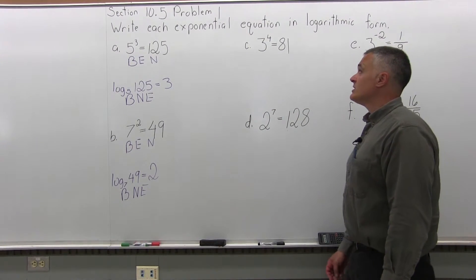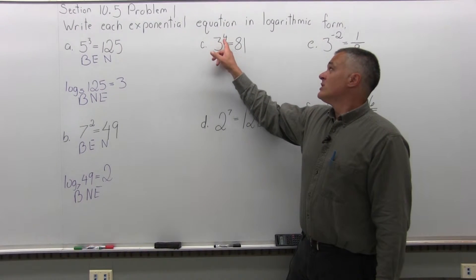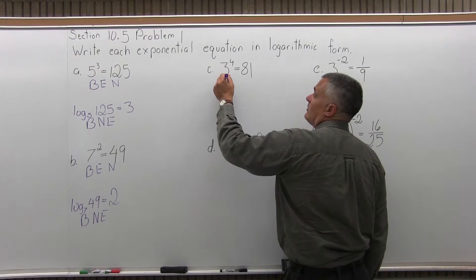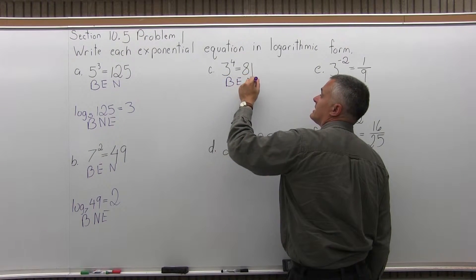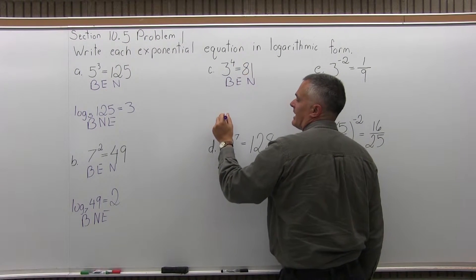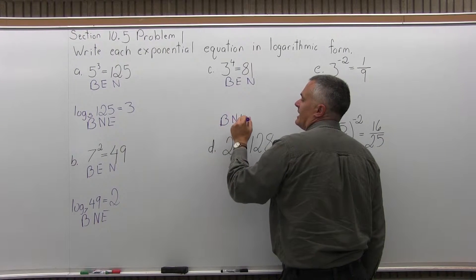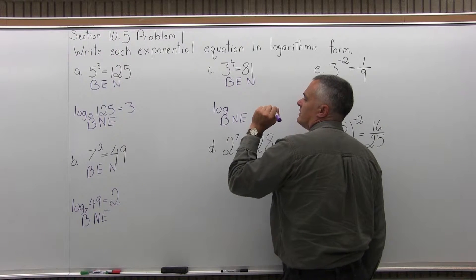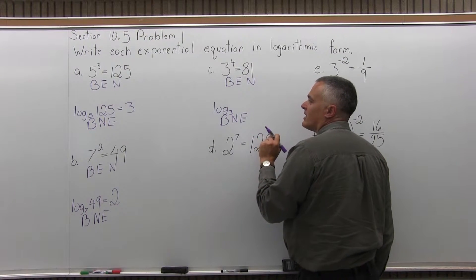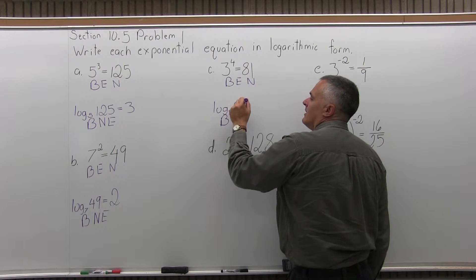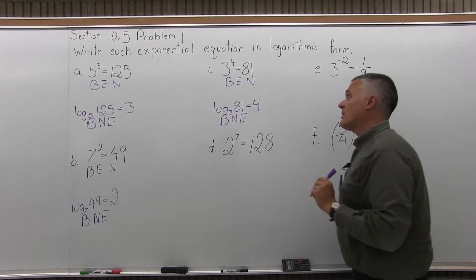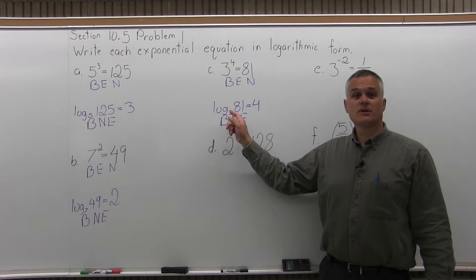Part C says write the equation 3 to the fourth power equals 81 in its log form. Under 3 to the fourth power equals 81, I write BEN: the base is 3, the exponent is 4, and the number is 81. Down below I write BNE: I start by writing log, then the base as a subscript — log base 3 — then the number 81, then equals, and then the exponent 4. So 3 to the fourth power equals 81 is the same as writing log base 3 of 81 equals 4.